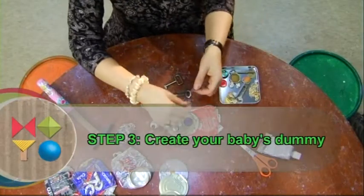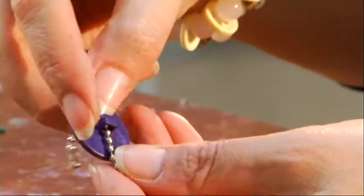Step 3. Create your baby's dummy. Thread the metal chain through the button.